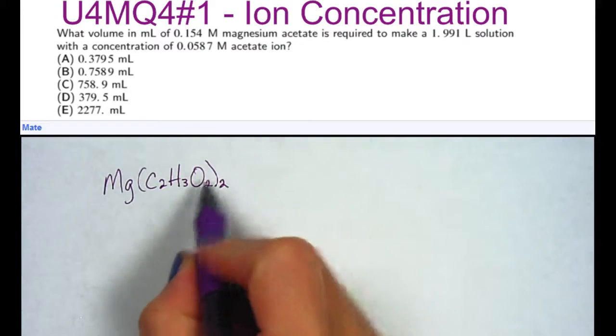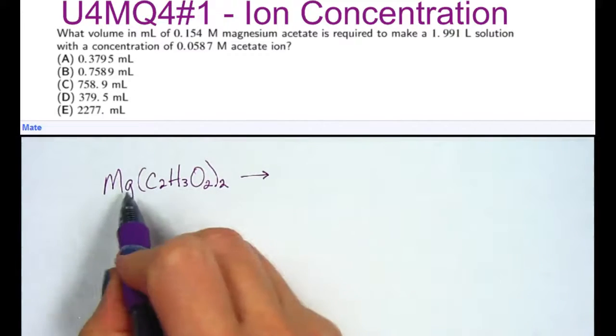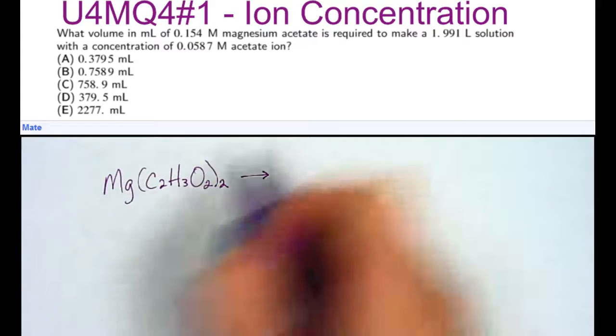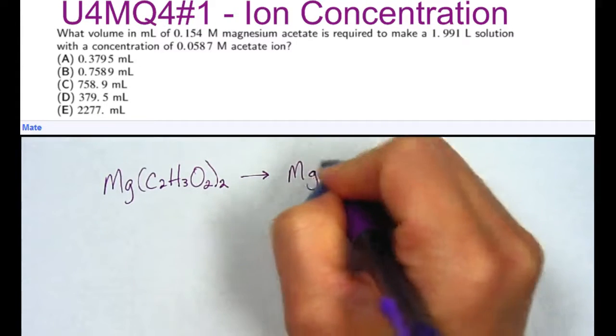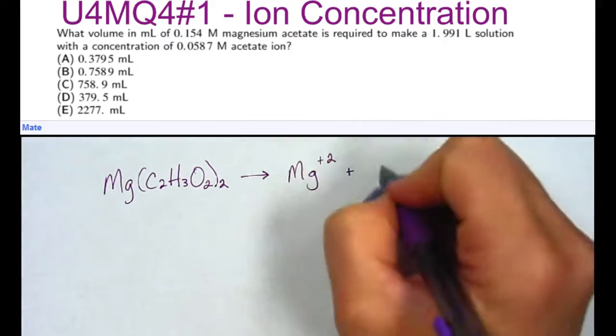First we need to write the dissociation equation for magnesium acetate, so we'll draw the yield sign, and we're basically going to break the ions apart. Magnesium has a plus 2 charge, there's one magnesium, and there are two acetate ions.